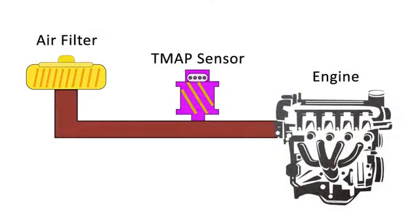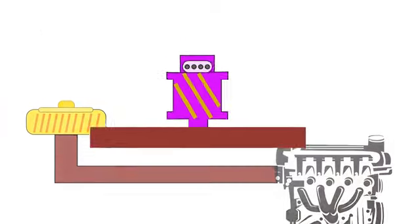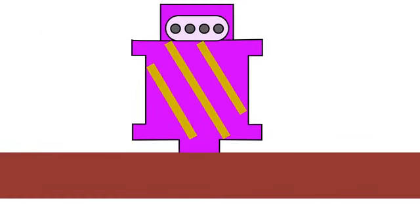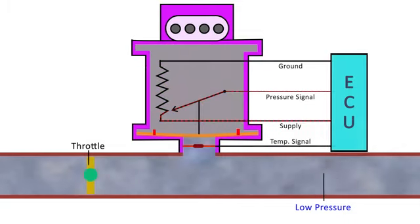T-map sensor is connected to the intake manifold by a vacuum line or directly. It is similar to a differential pressure sensor, working on a piezoelectric crystal principle.